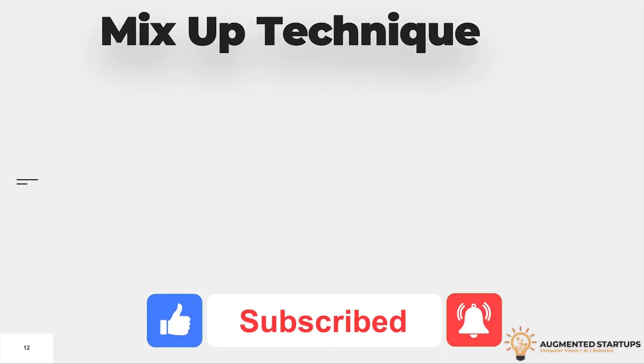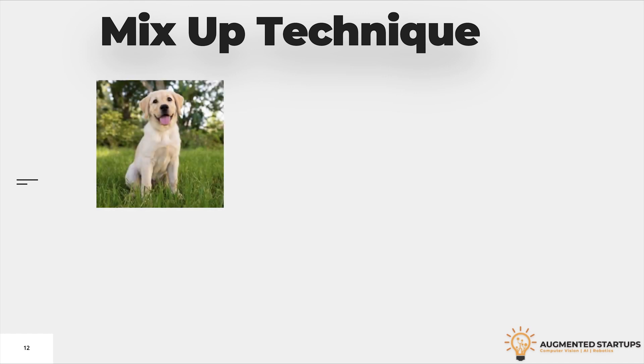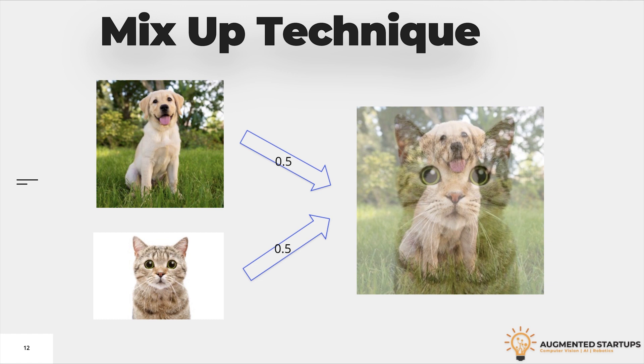The other technique they use is called mixup augmentation. In this, they take one image and overlay it on the other image to form a new image. As you can see here we have a dog image and a cat's image and one is overlaid on the other to make a new image which has both dog and the cat. Now, the model will learn to detect both of the objects in that image.